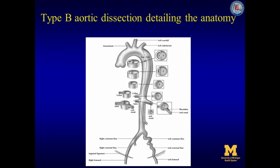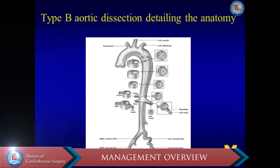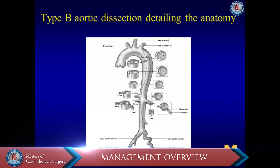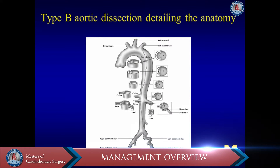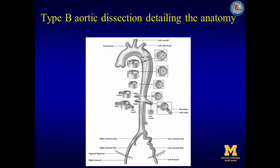In this figure, the primary entry tear is situated in the proximal descending thoracic aorta. The dissection flap distal to this shows evidence of collapse of the true lumen with dynamic obstruction of the celiac and superior mesenteric arteries — the dissection does not extend into these vessels but occludes them by intermittent obstruction of the flap during the cardiac cycle. In contrast, the left renal artery shows dissection without re-entry, with thrombus formation in the false lumen causing static obstruction and renal malperfusion.